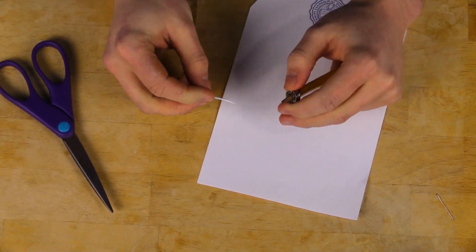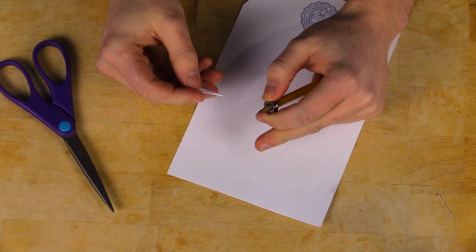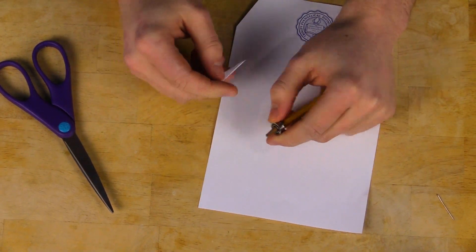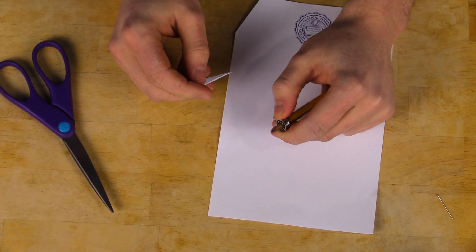So once you take the paper out and you see that black gunk you're simply going to cut another triangle, fold it in half again, put it in the bearing, rotate it and take it out. And you're going to keep repeating that process until there's no more black gunk left in the bearing.